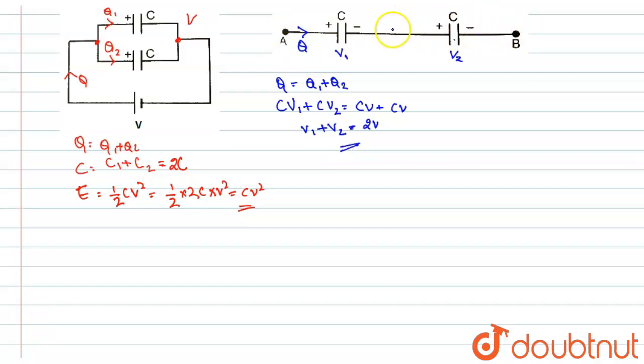Now the equivalent capacitance C is equal to C into C divided by C plus C, which is equal to C by 2. And the energy stored in this combination is given by half CV squared—here C is C by 2 and V is 2V whole squared.